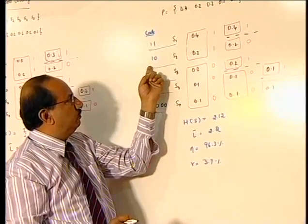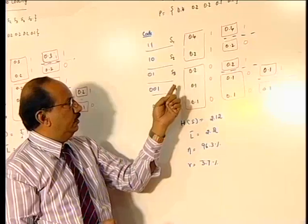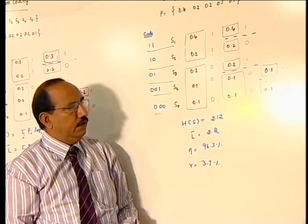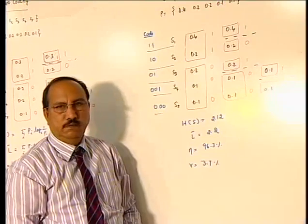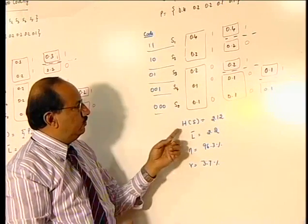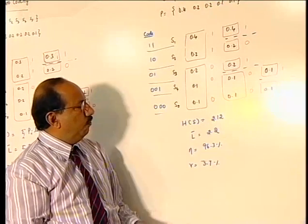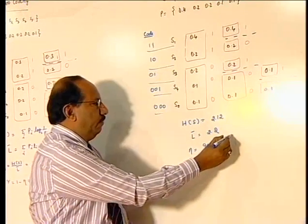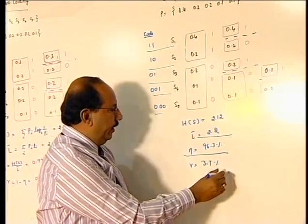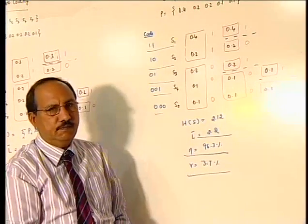That is 11 for S1, 10 for S2, 01 for S3, 001 for S4, and 000 for S5. I have explained how to find the efficiency using that formula. You will get 2.12 for H(S) and L bar is 2.2. The efficiency comes to be 96.3 percent, redundancy comes to be 3.7 percent.